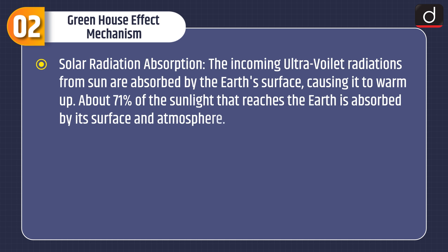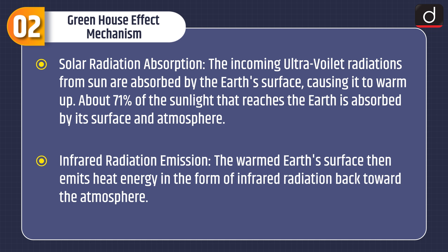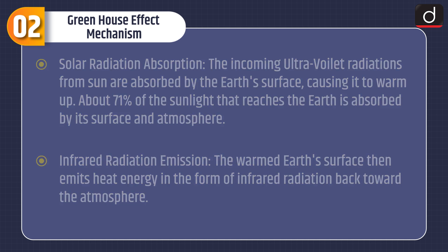Let us discuss the greenhouse effect mechanism. First, solar radiation absorption: the incoming ultraviolet radiations from the Sun are absorbed by the Earth's surface, causing it to warm up. About 71% of the sunlight that reaches the Earth is absorbed by its surface and atmosphere. Second, infrared radiation emission: the warmed Earth's surface then emits heat energy in the form of infrared radiation back toward the atmosphere.